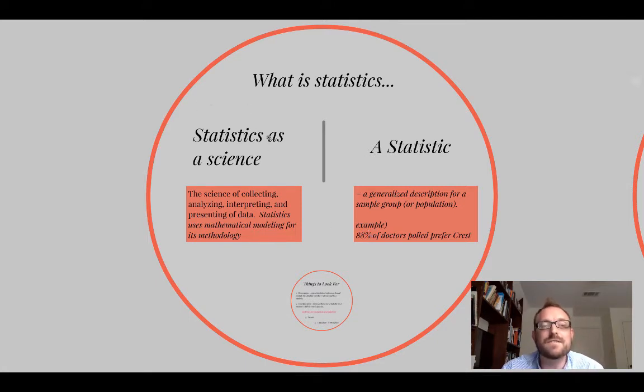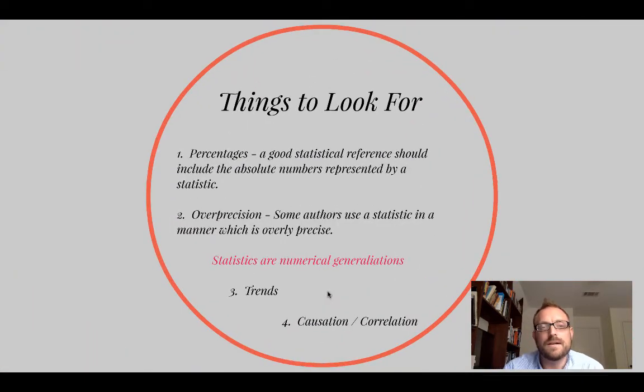Now, statistics as a science, of course, concerns the collection, the analysis, the interpretation, and the presentation of data. So you can think of statistics as a science that uses mathematical modeling, though statistics is not itself the same thing as mathematics. So statistics use mathematical modeling for its methodology of analyzing groups and analyzing the range and the way in which groups function over time, given certain sorts of parameters.